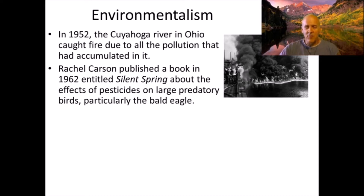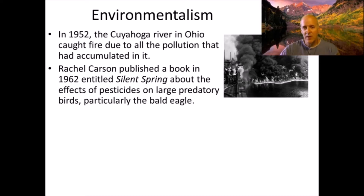Imagine you spray grasshoppers with DDT and before they die they jump into the water and get eaten by a fish. That fish eats two grasshoppers, so it now has twice as much DDT. A bigger fish comes by and eats three of those smaller fish — each of which had eaten two grasshoppers — so that one bigger fish now has six grasshoppers' worth of DDT. This increases rapidly up the food chain, until finally the bald eagle eats several of the bigger fish and accumulates a great deal of DDT.